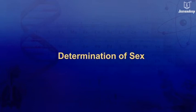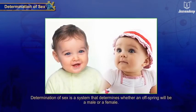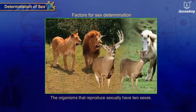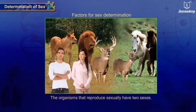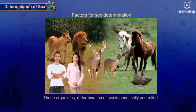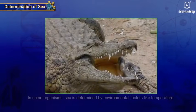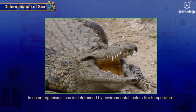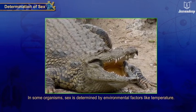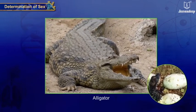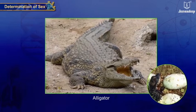Determination of Sex is a system that determines whether an offspring will be male or female. The organisms that reproduce sexually have two sexes. In most of these organisms, determination of sex is genetically controlled. In some organisms, sex is determined by environmental factors like temperature. For example, in alligators, the temperature at which the fertilized eggs are kept decides the sex of the offspring.